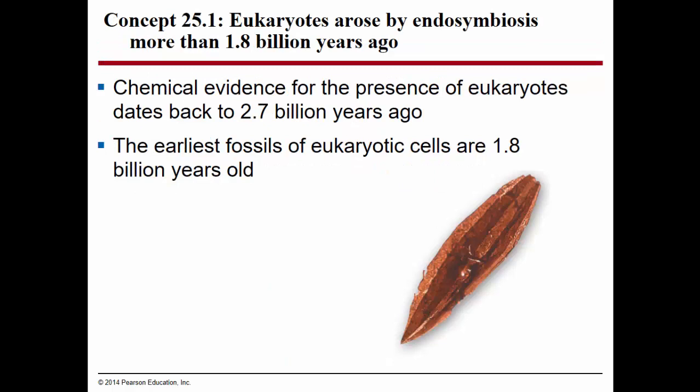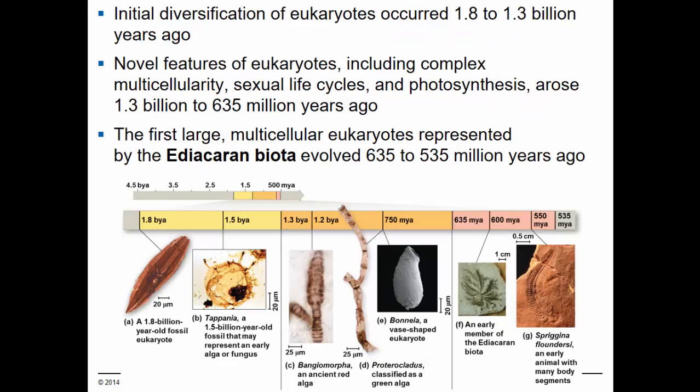Scientists have found fossils of eukaryotes that are as old as 1.8 billion years. There's also reason to think that eukaryotes existed earlier and that we simply haven't found the earliest fossils yet. Chemical evidence such as the molecular clock that we studied in unit 1 indicates that perhaps eukaryotes arose as early as 2.7 billion years ago.